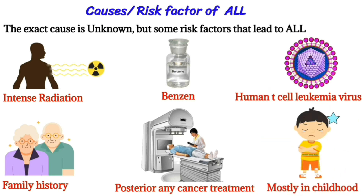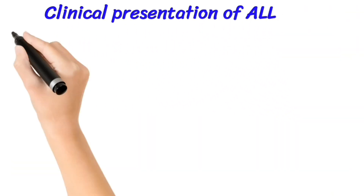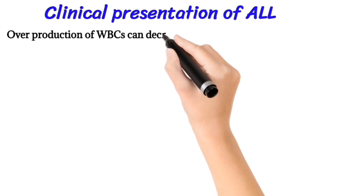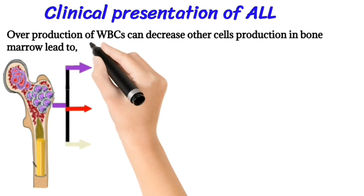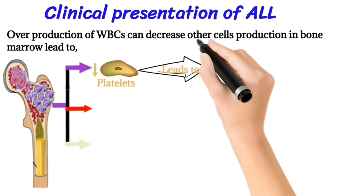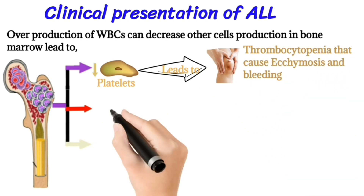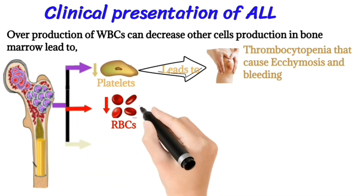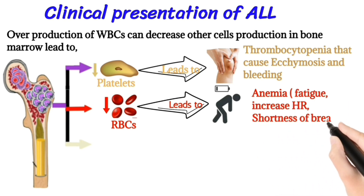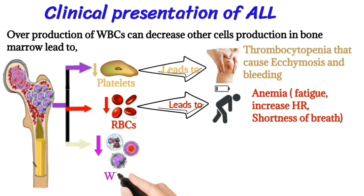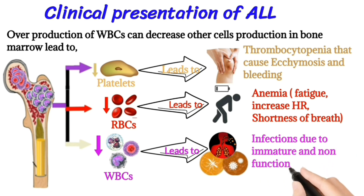Clinical presentation of acute lymphoid leukemia: the overproduction of white blood cells can decrease other cell production in the bone marrow. Decreased platelet production leads to thrombocytopenia, which can cause ecchymosis and bleeding. Decreased red blood cell production leads to anemia, with symptoms of fatigue, increased heart rate, and shortness of breath. Decreased functional white blood cells lead to infections due to immature and non-functional white blood cells.